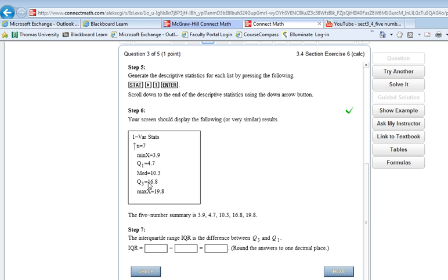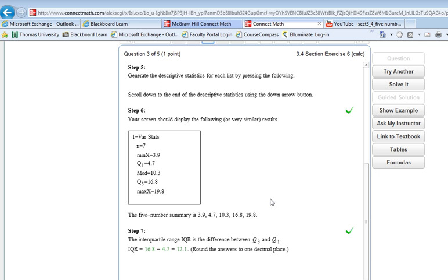Interquartile range. Your interquartile range is calculated by taking your Q3, which is 16.8, and subtracting your Q1, which is 4.7. When you do that, you should come out with 12.1. And there we go.